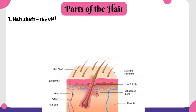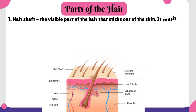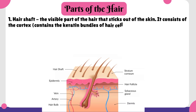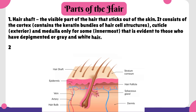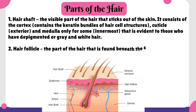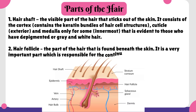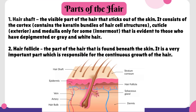Parts of the hair. 1. Hair shaft — the visible part of the hair that sticks out of the skin. It consists of the cortex, which contains the keratin bundles of hair cell structures; the cuticle on the exterior; and the medulla only for some, the innermost layer, which is evident in those who have depigmented or gray and white hair. 2. Hair follicle — the part of the hair that is found beneath the skin. It is a very important part which is responsible for the continuous growth of the hair.